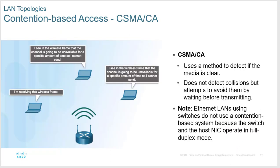Wireless uses CSMA/CA — Collision Avoidance — because wireless has no way to detect collisions after they happen. It works like time sharing: a client sends a Request to Send (RTS); the wireless access point responds with a Clear to Send (CTS) giving a time window, like 12 milliseconds. Only one device talks at a time. So even if you're connected at 54 Mbps on 802.11g, if you have two iPads, a Roku, and someone streaming video, your wireless may perform poorly because you're time sharing among all those devices.